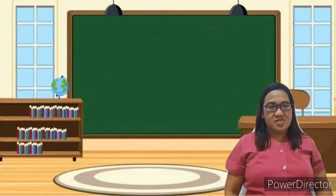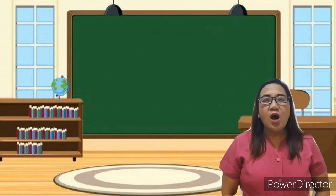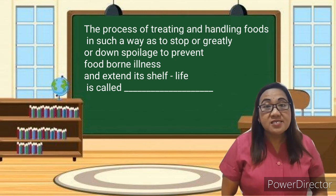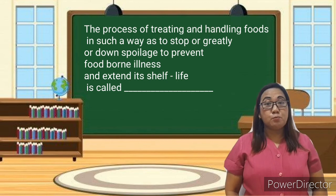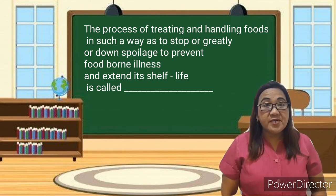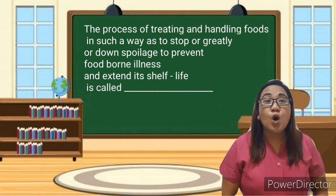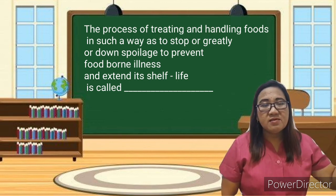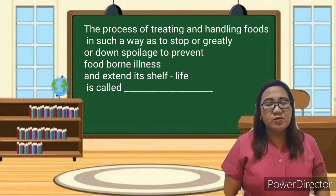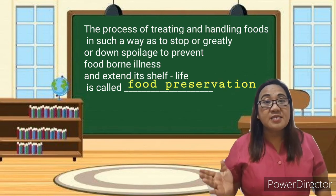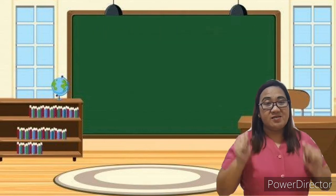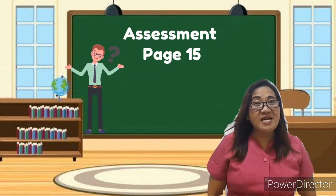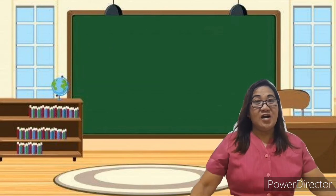For the second question: The process of treating and handling food in such a way as to stop or greatly slow down spoilage, prevent foodborne illness, and extend its shelf life is called — what do you think? Remelin? Very good, Remelin — your answer is correct: food preservation! Awesome answer! For your assessment, children, see page 15 in your module.